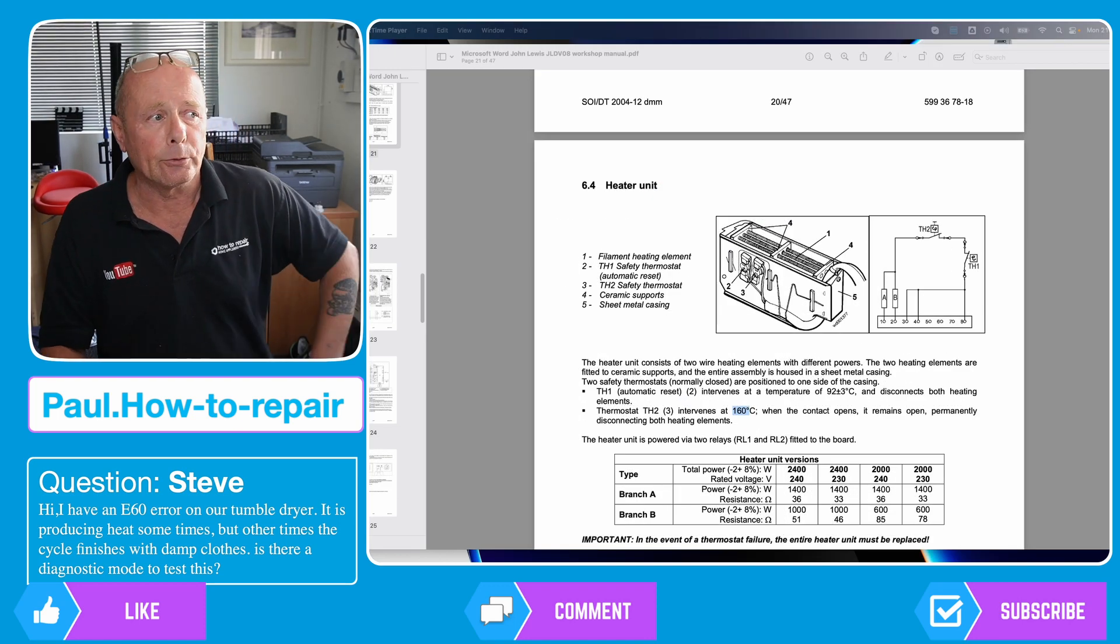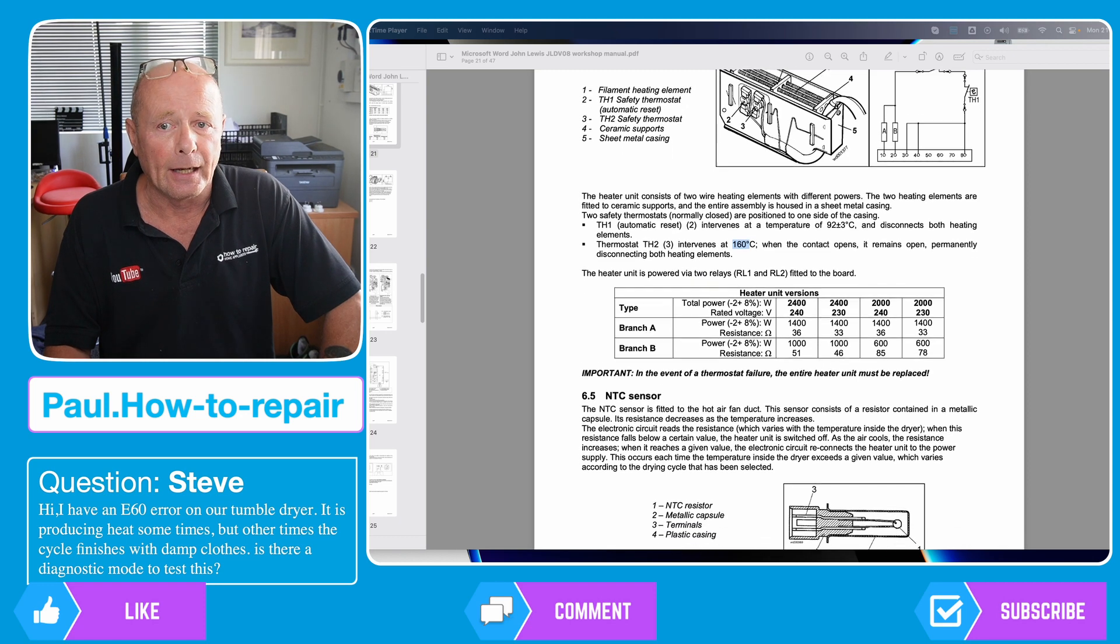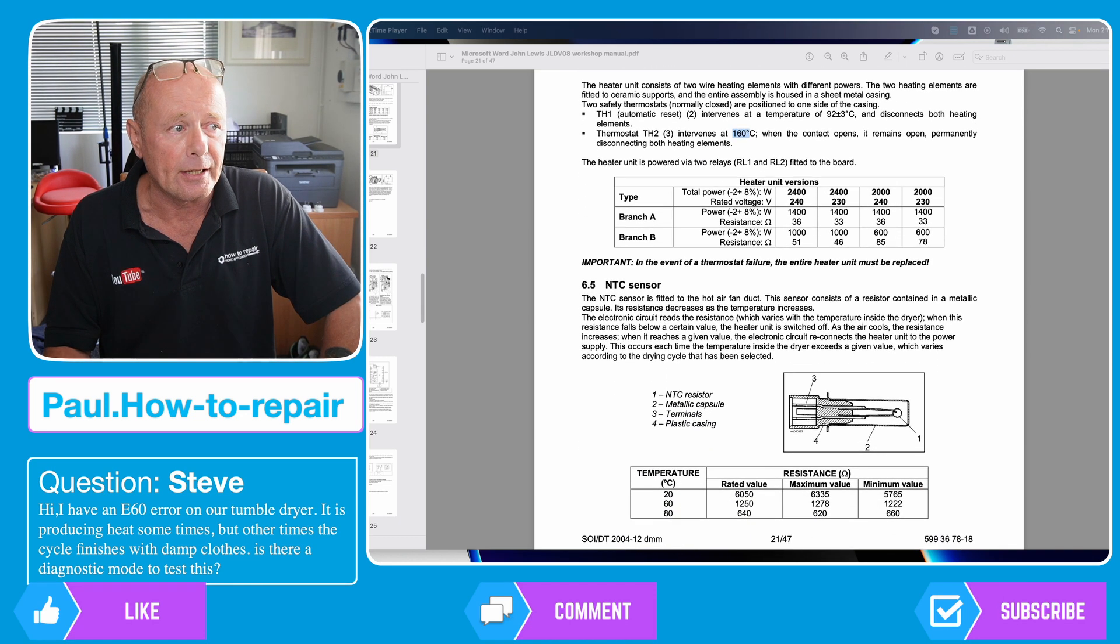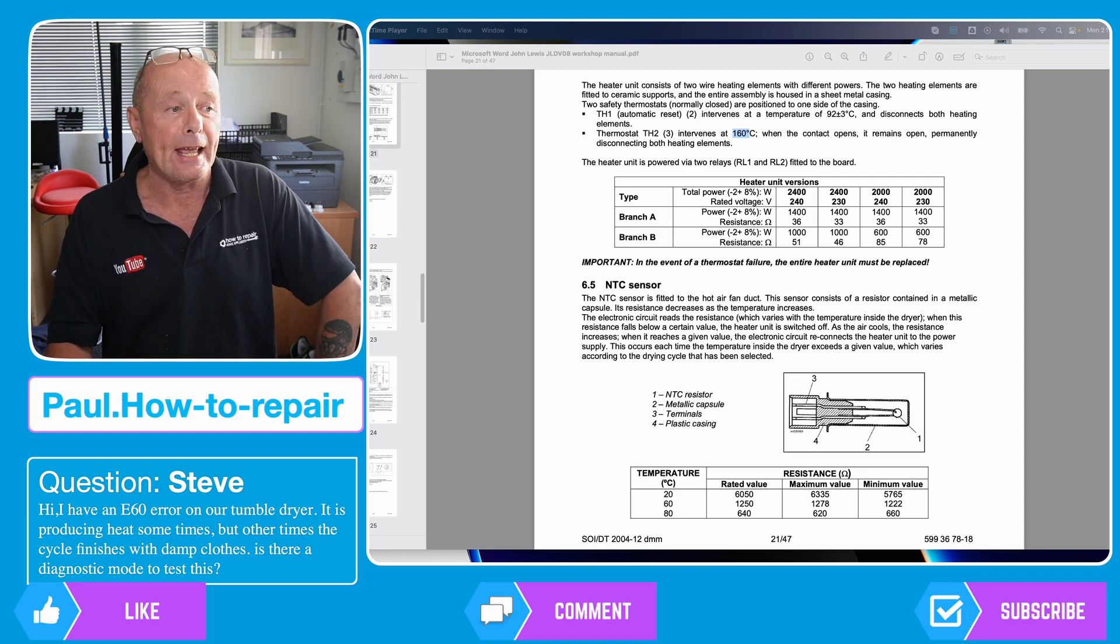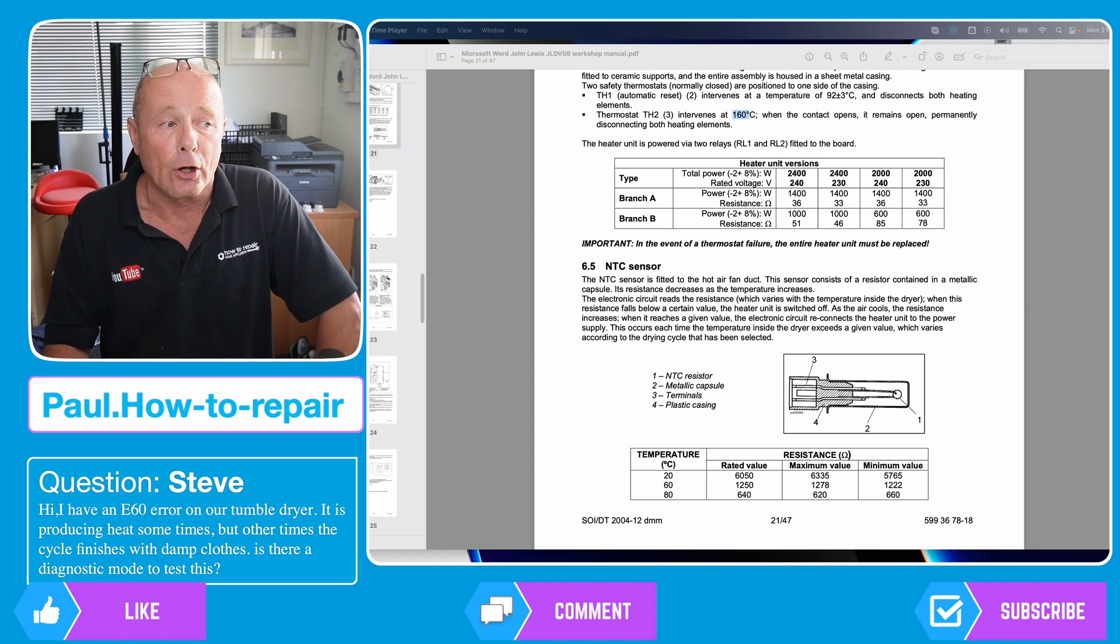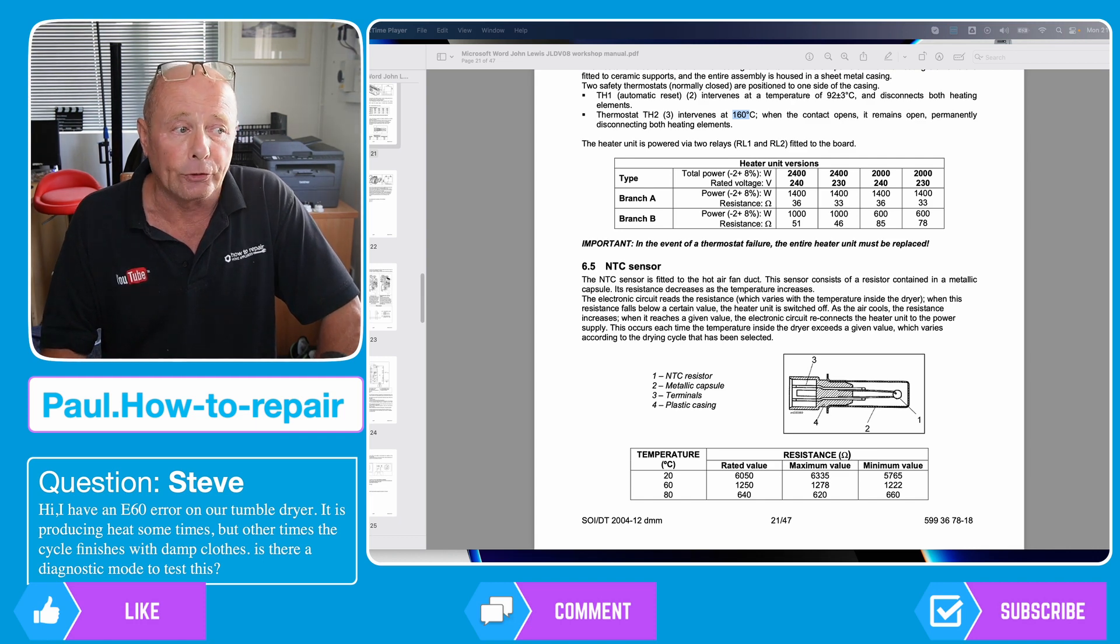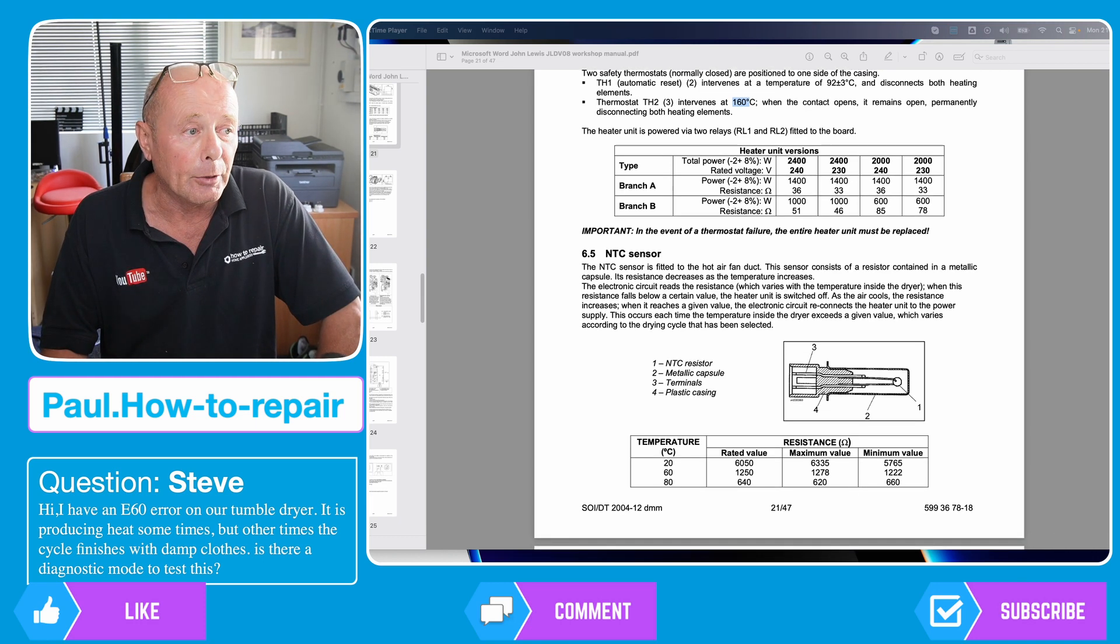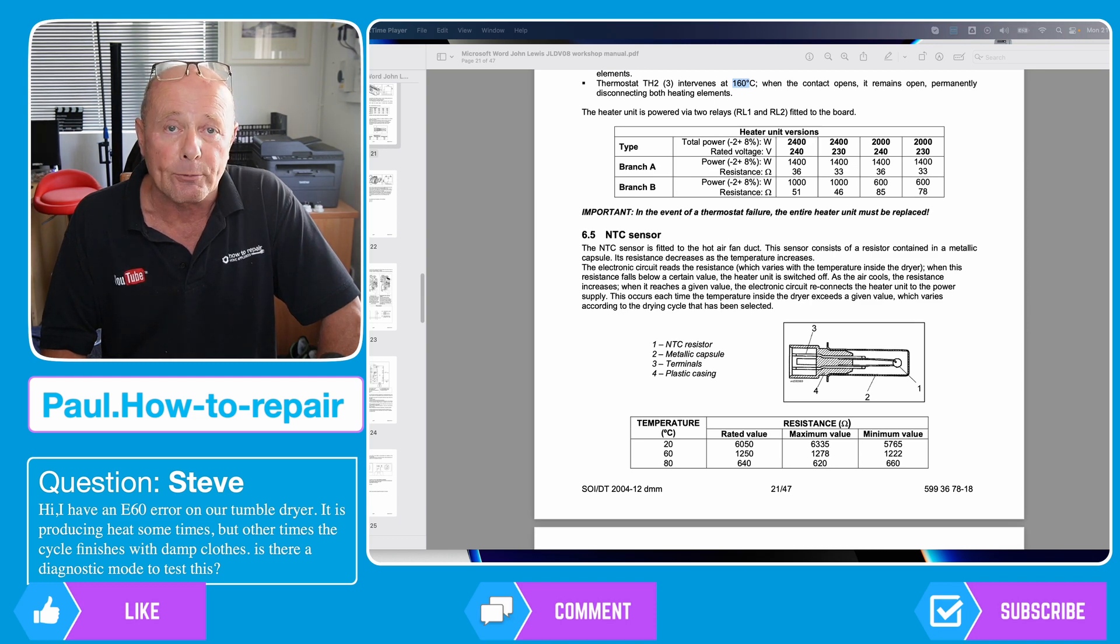Okay moving down now to the NTC sensor and as you can see the sensor I said was at the right hand side of the machine and it should be down by the motor area. Now you're able to check the values of the NTC sensor at room temperature. At 20 degrees it's rated at 6,000 ohms. The maximum resistance you should be getting is somewhere in the region of 6,335 and the minimum is 5,765. But you'll be able to check this and there is a video at the website to assist you in that.